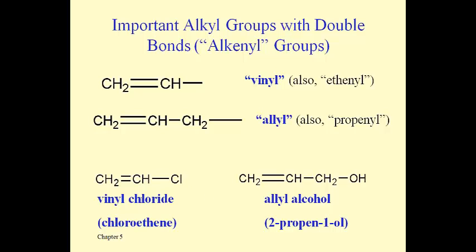So these molecules at the bottom can be named based on using these substituent names. Vinyl chloride is more officially named as chloroethene, and this allyl alcohol is a common name for what would be 2-propene-1-ol. Remember, we start numbering where the OH group is in preference to where the double bond is.